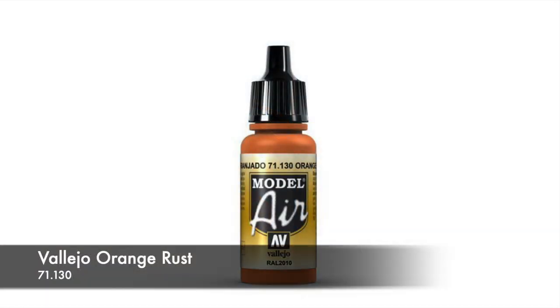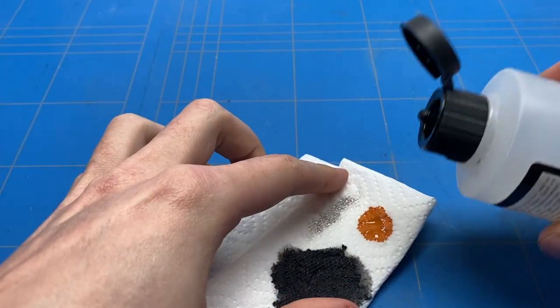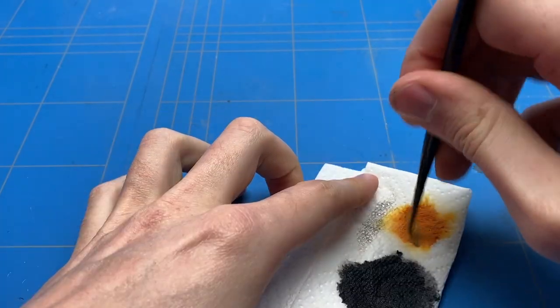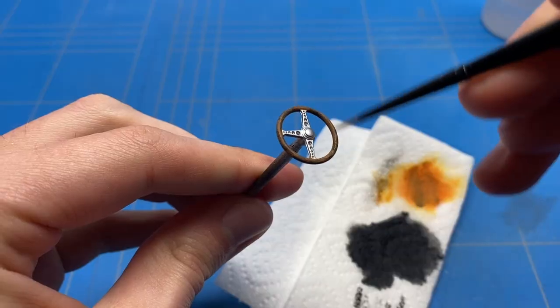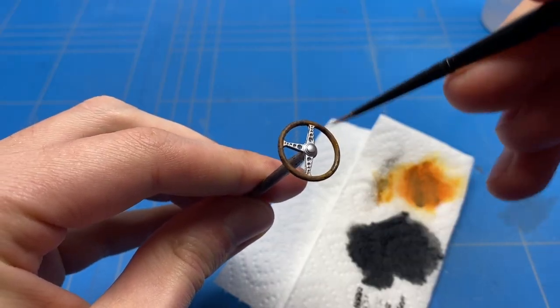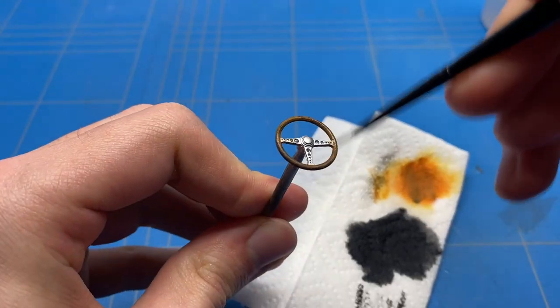After the black is applied, we're going to move over to an orange brown tone. This is orange rust, which again will be dry brushed on as well. I applied a little bit on the paper towel, added a lot of thinner to it to make it extremely thin and also a bit transparent.